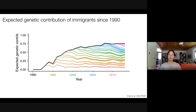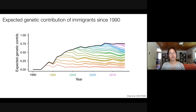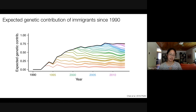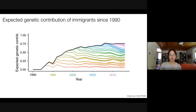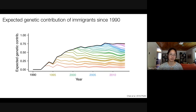We wanted to model how much immigrants are actually contributing genetically. Using simulations with our pedigree, we estimated the expected genetic contribution of incoming immigrants — meaning what proportion of alleles present in the birth cohort in any given year is expected to have been inherited identical by descent from an incoming immigrant. Treating all individuals in our population as residents in 1990, by 2013 about 75% of the genetic variation was brought in via immigrants appearing from 1991 onwards.